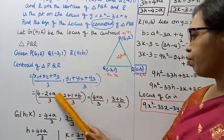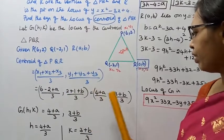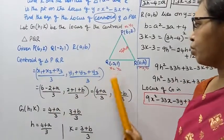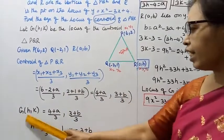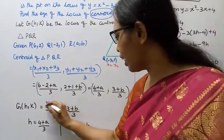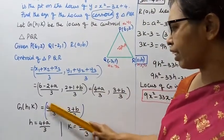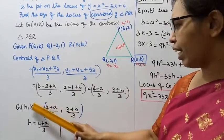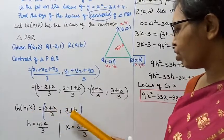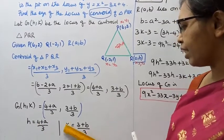So the centroid is (4 plus a by 3, 3 plus b by 3). Let the centroid be (h, k). Then h equals 4 plus a by 3, and k equals 3 plus b by 3.